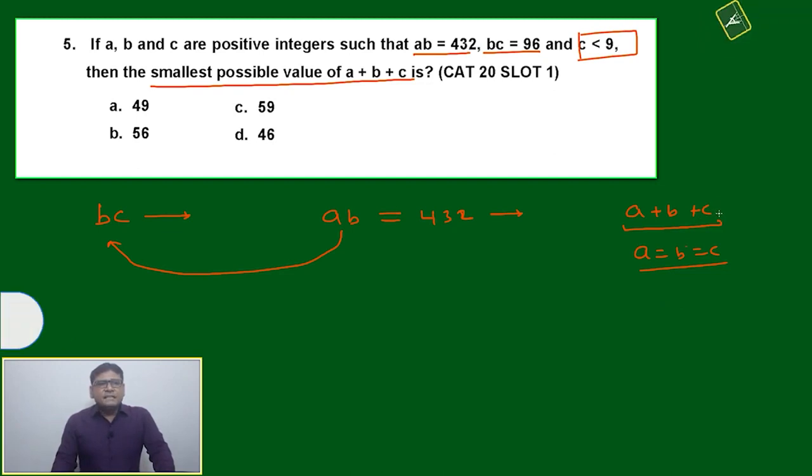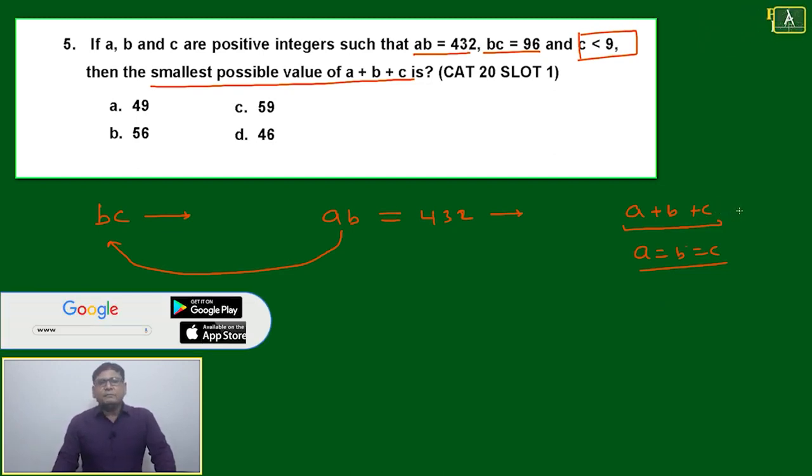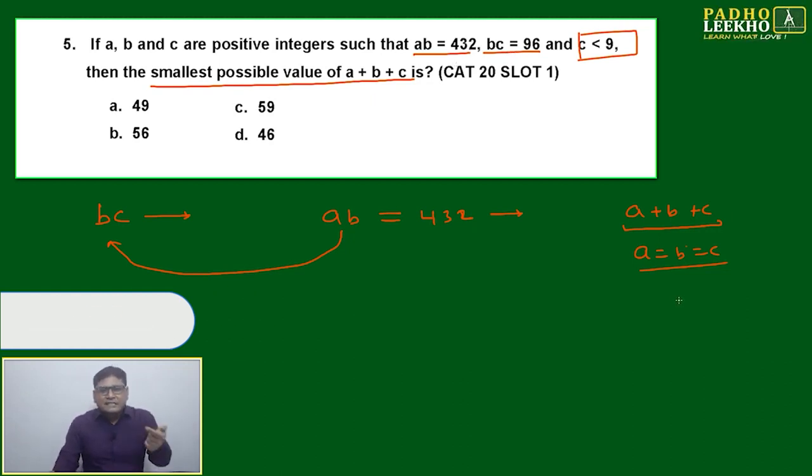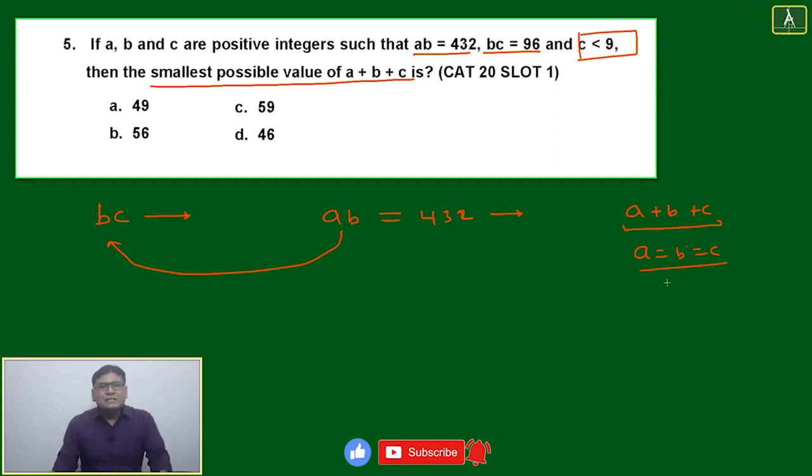For product, the summation a plus b plus c will be minimum if a equals b equals c. But here a equals b equals c is not possible because constants are there. So the next possible way is we will try to keep a, b, and c as near to each other as possible.